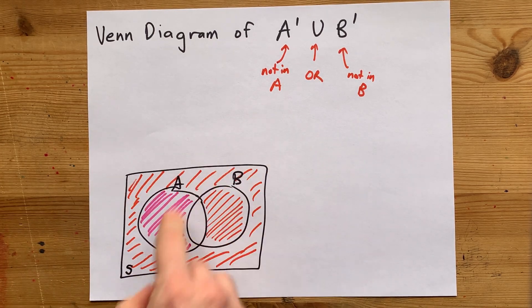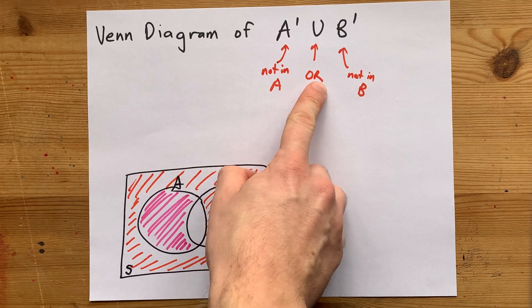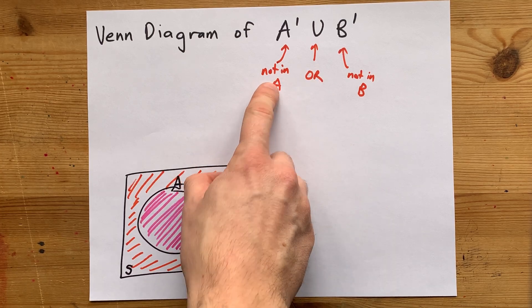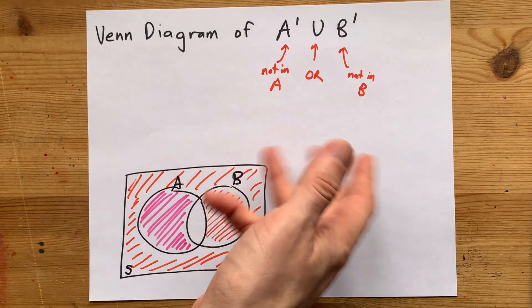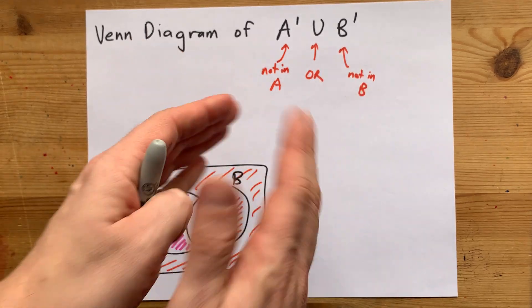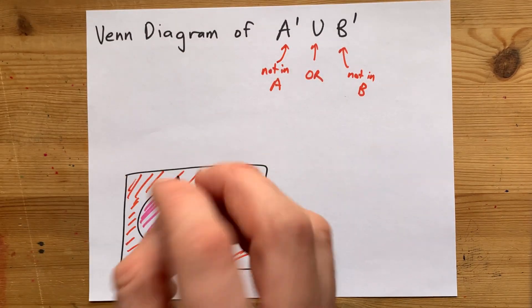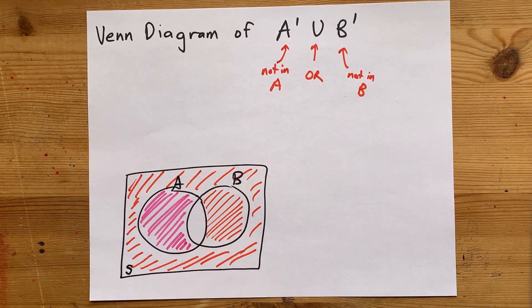And I know that it was inside A, which goes against this. But the or operator means that either this description or alternatively and separately, this description, either one of those could be true in order for a section to get shaded. That's it.